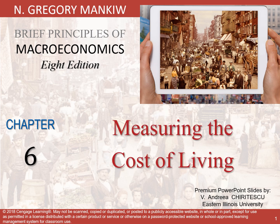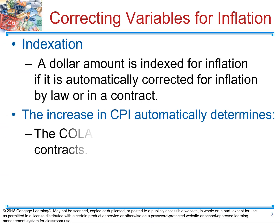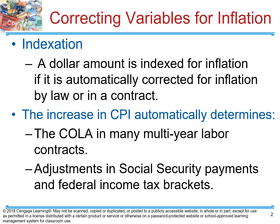Hello guys, Yulia Bonova here. We're going to complete chapter 6 by talking about indexation and nominal and real interest rates. Indexation is when a dollar amount in a contract is corrected for inflation automatically. So by law, if it says in the contract that your wages, salary, or some kind of rent agreement is indexed for inflation, it means that each year that dollar amount has to be corrected for inflation.